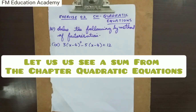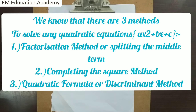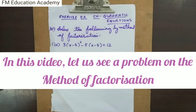We will see a sum on quadratic equations. We know that there are three methods to solve any quadratic equation of the form ax² + bx + c. The three methods are: factorization method, completing the square method, and the quadratic formula method, also known as the discriminant method. In today's video we will see a problem on the method of factorization, also called the splitting the middle term method.